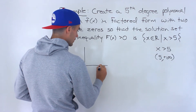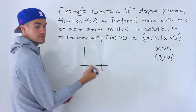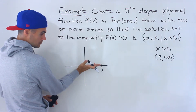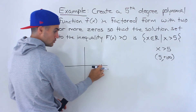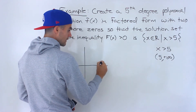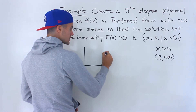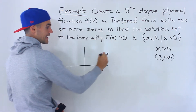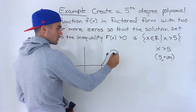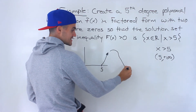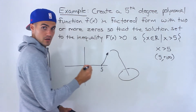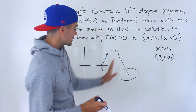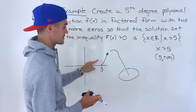Notice that five actually has to be one of the zeros. This function has to be greater than zero — meaning all the y-values have to be positive — only when x is greater than five. So we know the function looks like this in that portion, just keeps increasing. It can't turn after five, because if it turned it would cross the x-axis again and be negative for some x value greater than five. So for all x values greater than five, the function has to be positive.